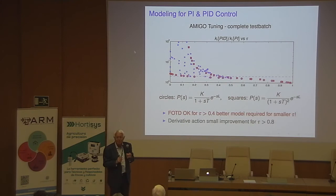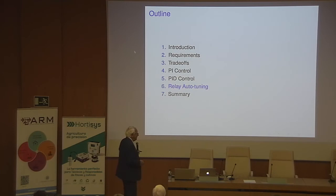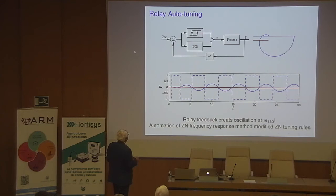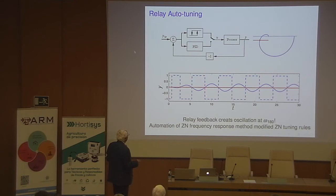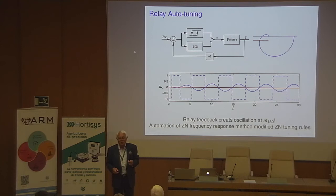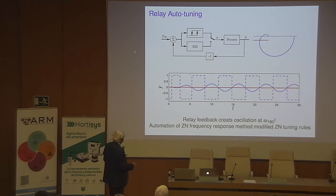Now we come to relay auto-tuning. The idea is to switch in a relay instead of the PID controller, and an oscillation develops. Approximating the output as a sine wave, you are exactly 180 degrees out of phase, so you're picking up the point on the Nyquist curve where the phase is minus 180 degrees. With hysteresis in the relay, you pick up a different point. This is essentially automating the Ziegler-Nichols frequency response method — flip in the relay, wait for steady state, and get information about one point on the Nyquist curve.